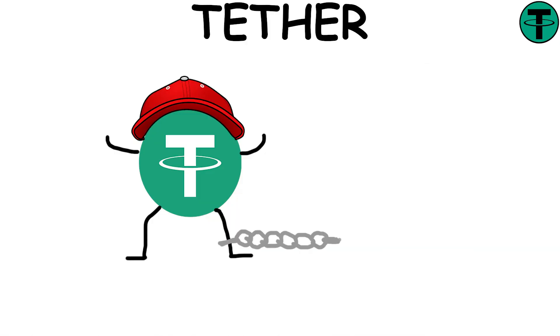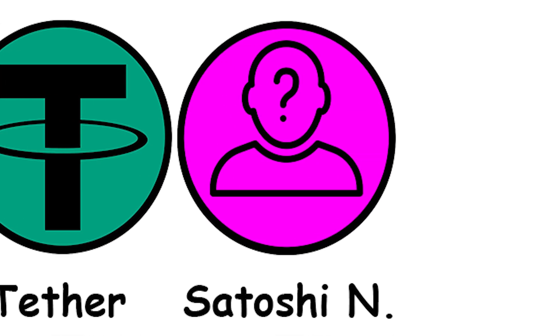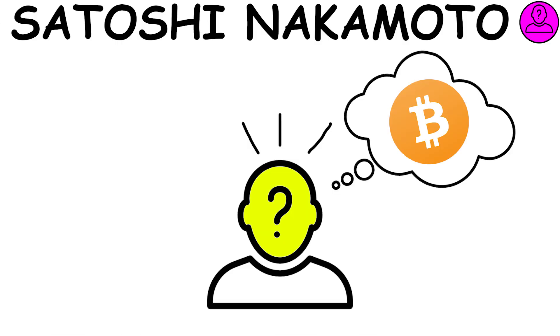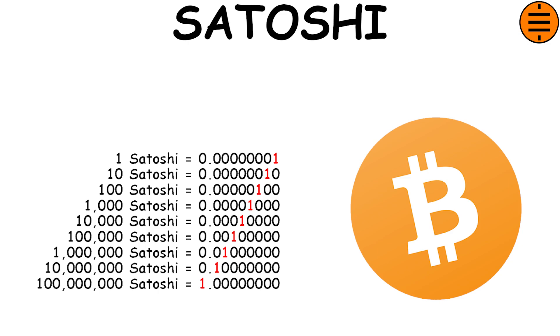Tether: a stablecoin tied to the U.S. dollar. Satoshi Nakamoto: the anonymous creator of Bitcoin. Satoshi: it is the smallest unit of a Bitcoin.